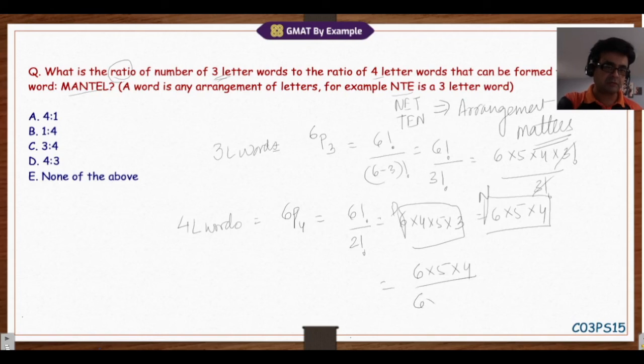This will cancel off and I would have 1/3 as my answer to the question asked. As we can see, none of the answer choices actually cater to the answer I'm getting, so the answer to this question would be E: none of the above.